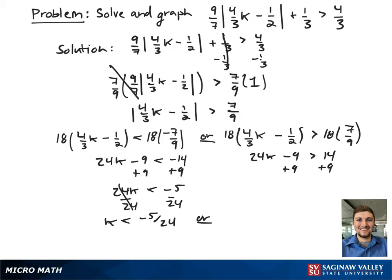Then we're going to add 9 to both sides to get rid of the single term, and this gives 24k is greater than 23, and then to get k by itself, we divide both sides by 24, and this gives k is greater than 23 over 24.